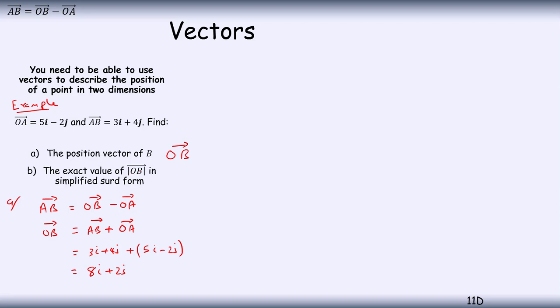In part b, it says find the exact value of the magnitude of OB. So we want to find the magnitude of OB. That's part b of the question. So the magnitude of OB is going to be given by, if we recall, the square root of 8 squared plus 2 squared. It's going to give me the square root of 64 plus 4, which is the square root of 68.